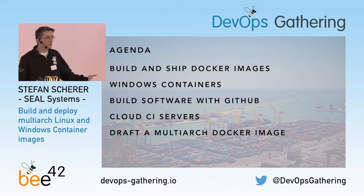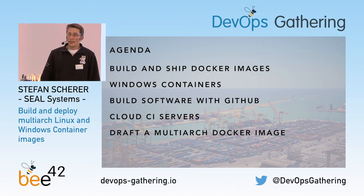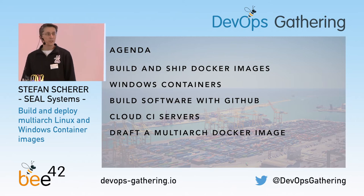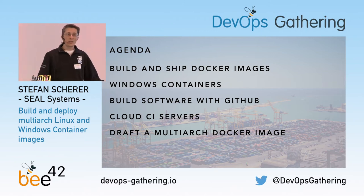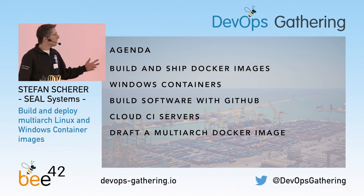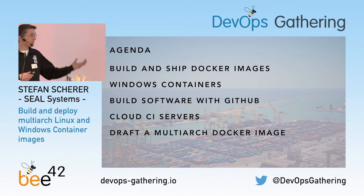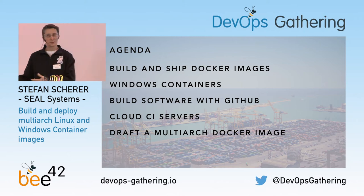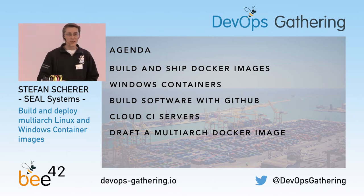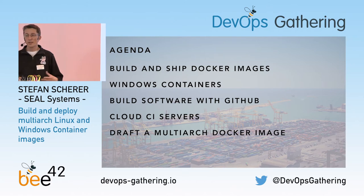I have a small example that I will show you live. It's a GitHub repo with an application, and I've added some cloud CI servers to show you how to connect GitHub with cloud CI servers that help you easily build your application, test it, put it into a Docker image, and ship it to the Docker Hub. And then finally, because we're using multiple platforms, I want to provide my application for all customers — some running Windows, some running Linux. I'll show you how to combine a Docker image for multiple platforms using the current Docker version and Docker Hub.